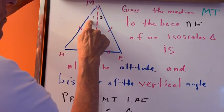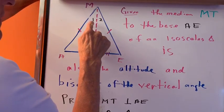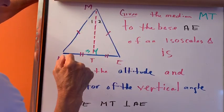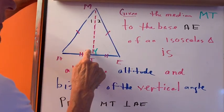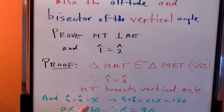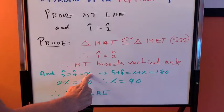Therefore, angle one equals angle two. That means MT bisects the vertical angle. Also, angle three equals angle four. Go down to the bottom: angle three equals four. Let's say they're equal to x.